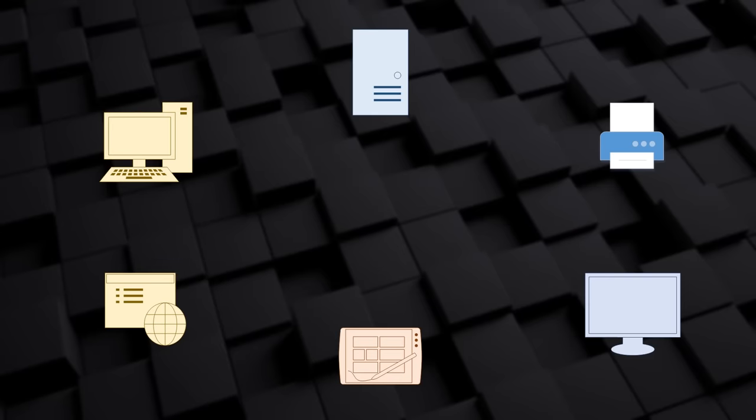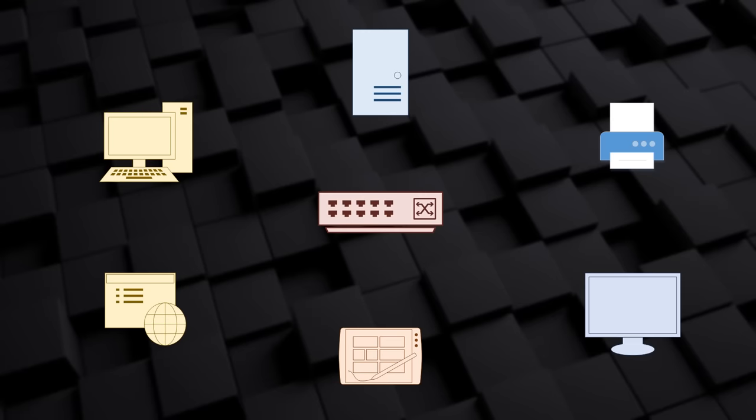Mostly, network users are unaware of the network they're using. As long as they can browse the internet, do their job, browse YouTube, they're usually fine. For all of these devices to communicate, they need to be connected together somehow. One way is to plug cables into the devices and connect them to another device called a switch.